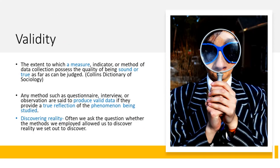Let us now look at the concept of validity. Validity refers to the extent to which a measure, indicator, or method of data collection possesses the quality of being sound or true as far as can be judged. That is, any method such as questionnaire, interview or observation is said to produce valid data if it provides a true reflection of the phenomenon being studied. In other words, sociologists are concerned with discovering reality, and they ask themselves whether the method they employ allowed them to discover the reality they set out to discover in the first place. This is what we understand by validity.